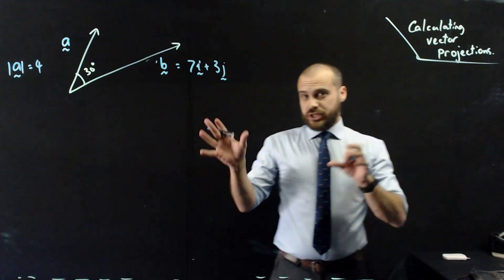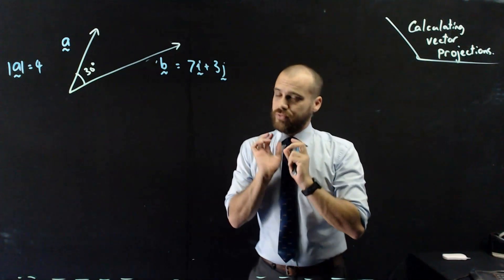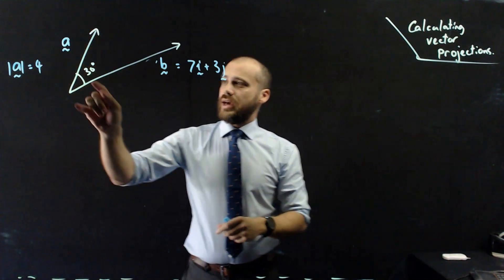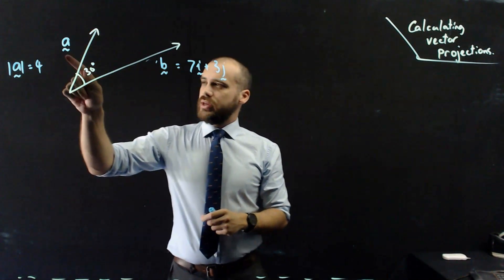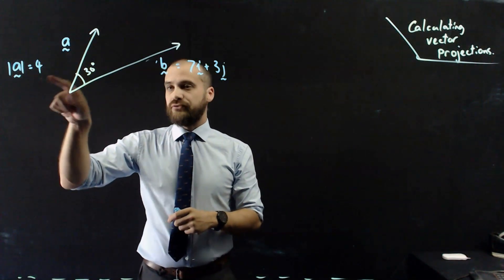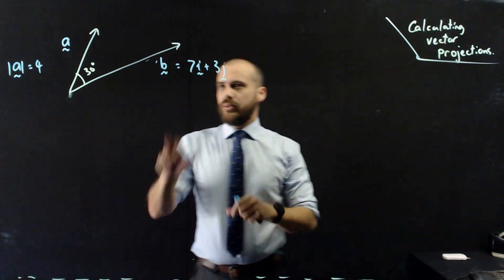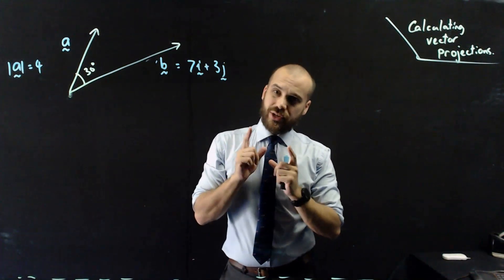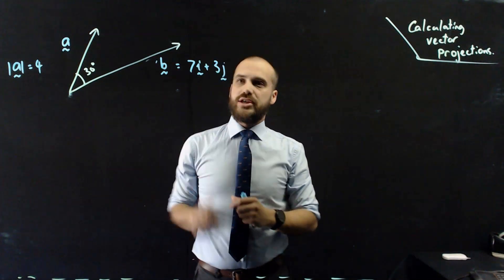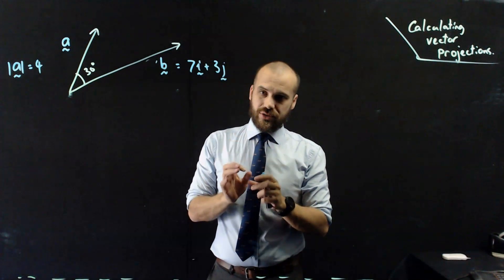I'm going to calculate a vector projection. We've got a vector A, a vector B, and an angle between them. We know that vector A has a magnitude of 4, vector B can be written in component form 7i + 3j, and the angle between these two vectors is 30 degrees.